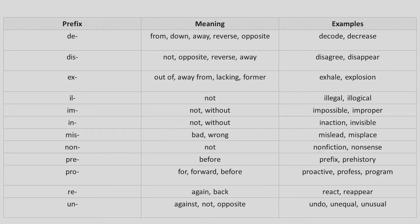EX is one more prefix which means out of, away from, or former — for example, exhale, explosion. IL means not or is used to form the opposite — for example, illegal, illogical. IM again means without, helping to form opposite words — for example, impossible, improper. IN is similar to IM and also helps to form opposite words — for example, inaction, invisible. MIS usually means bad or wrong — for example, mislead, misplace.